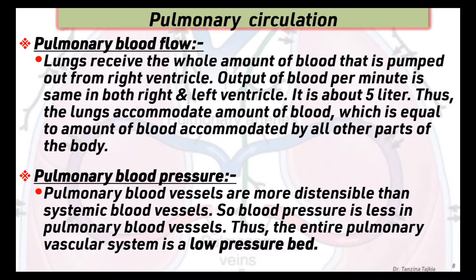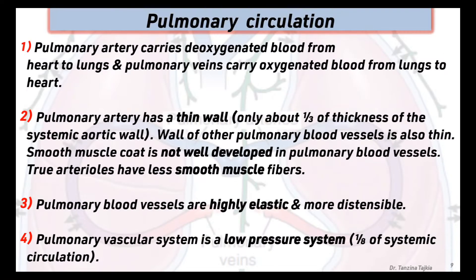The lungs receive the whole amount of blood pumped out from the right ventricle. The output of blood per minute is the same in both right and left ventricles, which is about 5 liters. Thus the lungs accommodate an amount of blood equal to that accommodated by all other parts of the body. The pulmonary blood vessels are more distensible than systemic blood vessels, so blood pressure is less, making the entire pulmonary vascular system a low pressure bed.